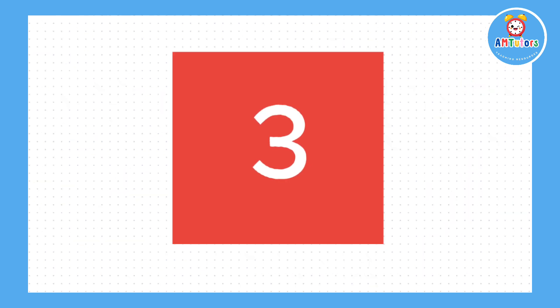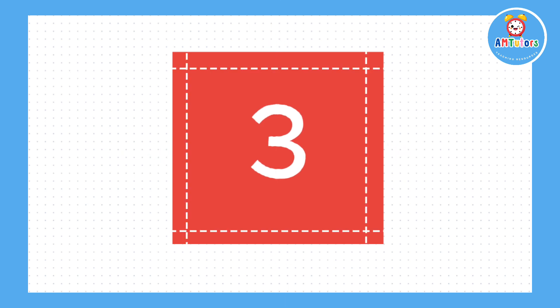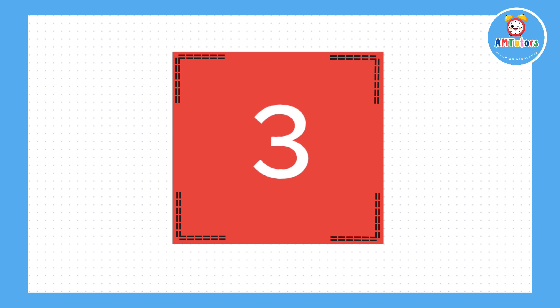Next is a square. A square has four sides and they are all the same length. It also has four corners and each of those corners is a right angle.